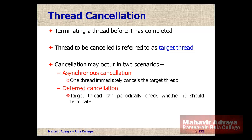Deferred cancellation works by one thread indicating that the target thread is to be cancelled, and the target thread continuously checks whether it should be cancelled, and is terminated on that basis.